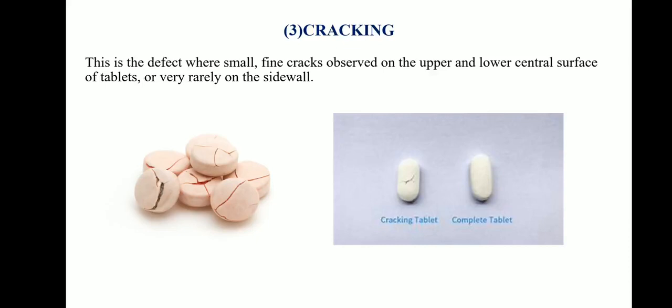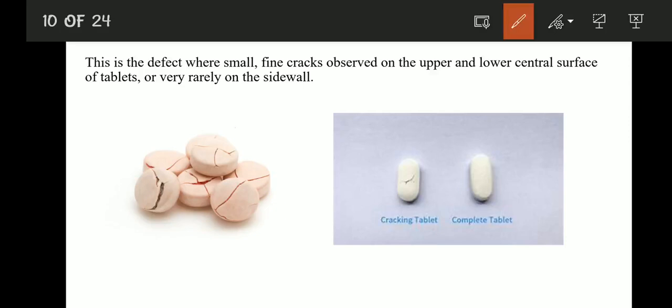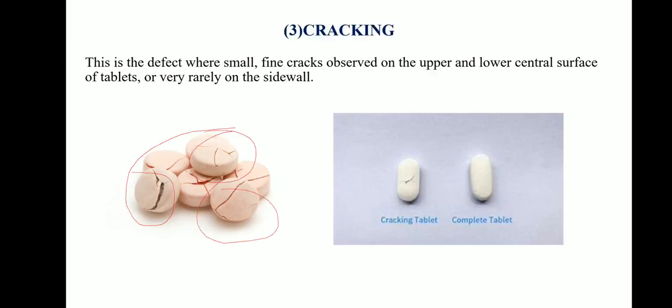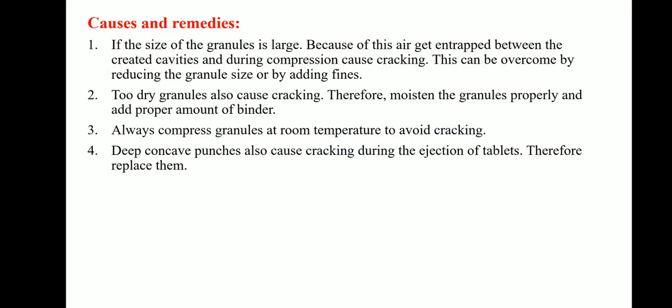The next process-related defect is cracking, where small fine cracks are observed on the upper and lower central surface of tablets. Causes and remedies: First, large granule size causes air entrapment between cavities during compression; reduce granule size or add fines. Second, too dry granules cause cracking; moisten the granules properly and add proper amount of binder. Third, always compress granules at room temperature. Fourth, deep concave punches cause cracking during ejection; replace them.